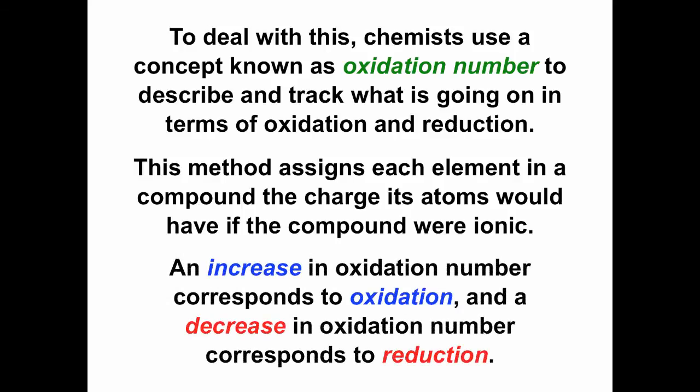The principles we've talked about before still hold. Oxidation still corresponds to losing electrons, which means the oxidation number increases; reduction corresponds to gaining electrons, or decreasing the oxidation number. If this seems backwards, remember that electrons are negatively charged — fewer electrons means less negative charge, higher positive charge, and more electrons means lower or more negative charge.